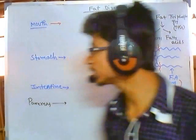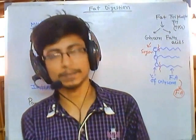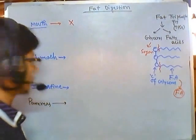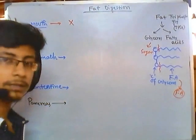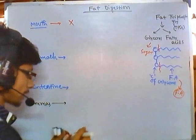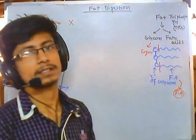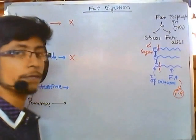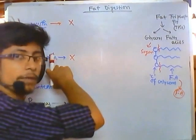Now let's look at the different stages of fat digestion. Fat digestion never takes place in the mouth because there are no fat-degrading enzymes there. In the stomach as well, there is normally no secretion of lipase enzymes to break down fat. So neither the mouth nor the stomach can break down fat.